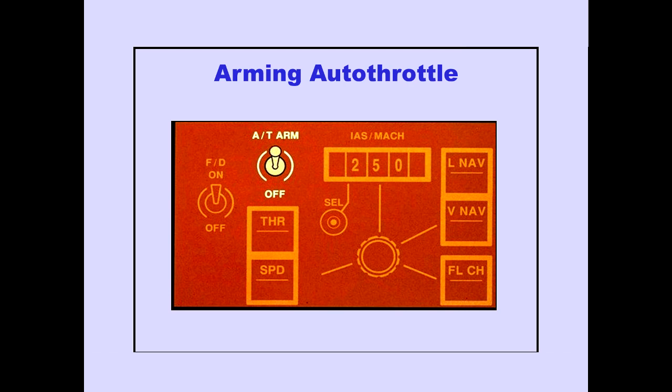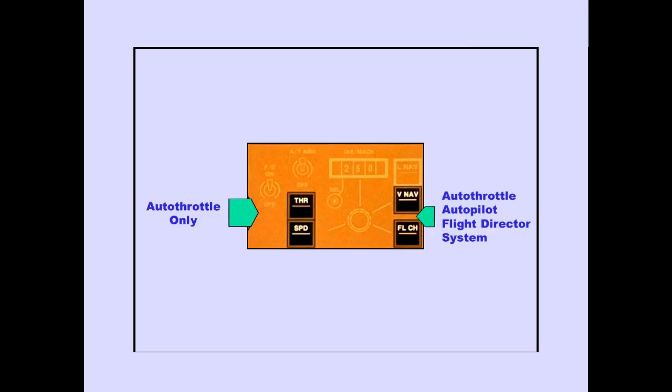The autothrottle arm switch is a two-position switch. The arm position arms the autothrottle system for activation. These are the four autothrottle select switches. The thrust and speed switches control only the autothrottle. The VNAV and flight level change switches affect both the autothrottle and the autopilot flight director system. VNAV is discussed in the Autoflight LNAV and VNAV module.